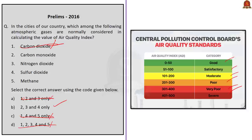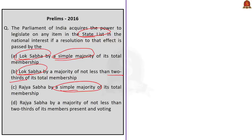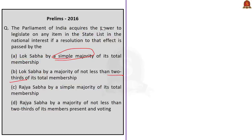Moving on to the next question: The Parliament of India acquires the power to legislate on any item in the State List in the national interest if a resolution to that effect is passed by which body? Options are: Lok Sabha by simple majority of total membership; Lok Sabha by two-thirds majority; Rajya Sabha by simple majority; or Rajya Sabha by a majority of not less than two-thirds of its members present and voting.